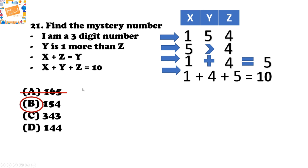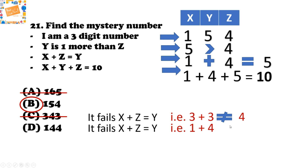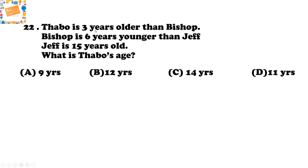For option C, 343: X plus Z equals 3 plus 3 equals 6, but the tens digit Y is 4, so this fails. For option D, 144: X plus Z equals 1 plus 4 equals 5, but the tens digit Y is 4, so this also fails. The correct answer is option B, 154.